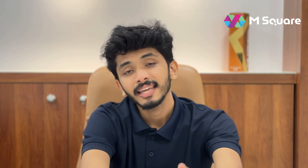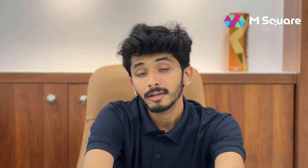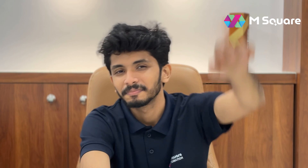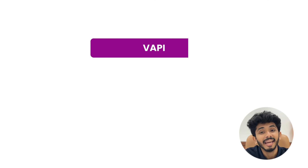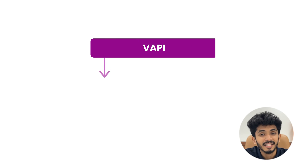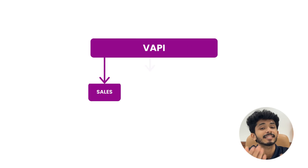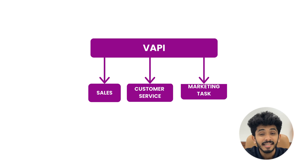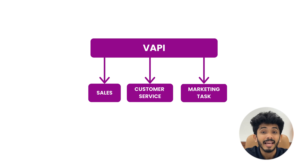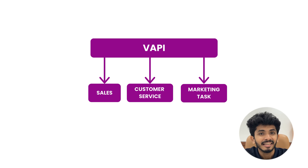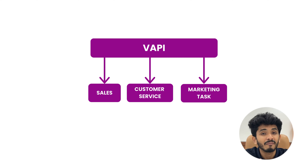Imagine having an intelligent AI assistant that not only understands your needs but also acts very fast. That's exactly what WAPI AI assistants do. WAPI is an AI-powered virtual assistant designed to handle sales, customer service, and marketing tasks. It leverages natural language processing and machine learning to interact with customers, answer queries, and perform various tasks typically handled by humans.